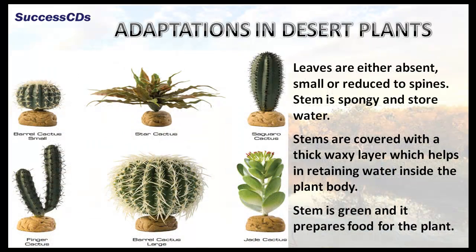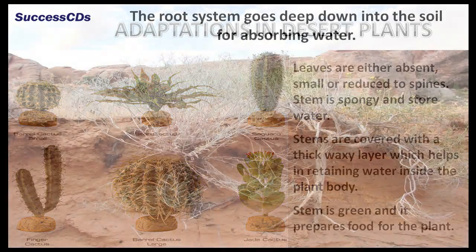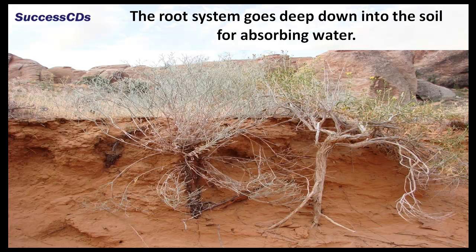Like animals, desert plants are also adapted to stay in such extreme climate. In desert plants, leaves are either absent, small or reduced to spines. The stem is spongy and stores water. Stems are covered with a thick, waxy layer which helps in retaining water inside the plant body. The stem is green and it prepares food for the plant. The root system goes deep down into the soil for absorbing water.